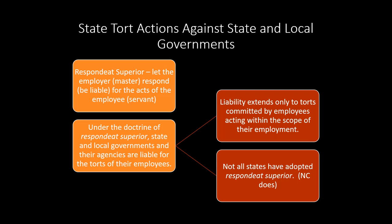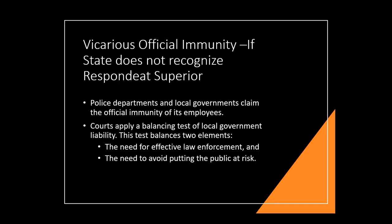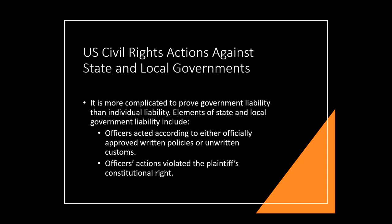Not all states have adopted Respondeat Superior. If a state does not recognize it, police departments and local governments can claim vicarious official immunity for their employees. There is a balancing test: do we need effective law enforcement, or do we need to protect the public? By and large, more weight is given to law enforcement. Going back to 42 U.S.C. 1983: it's much more complicated to prove government liability under a U.S. civil rights action.